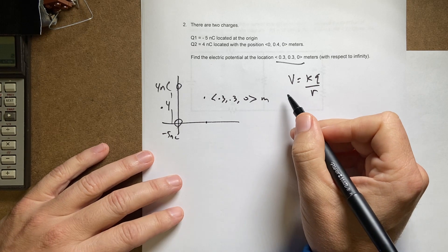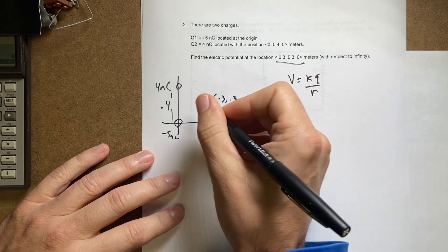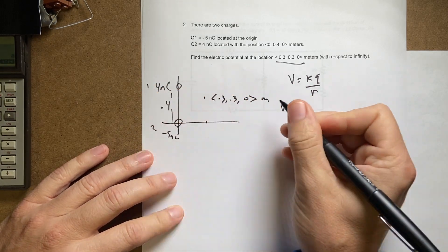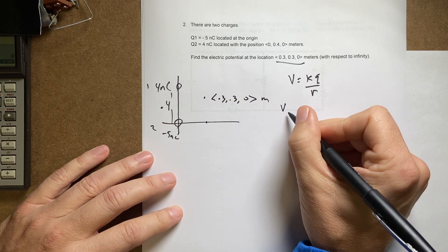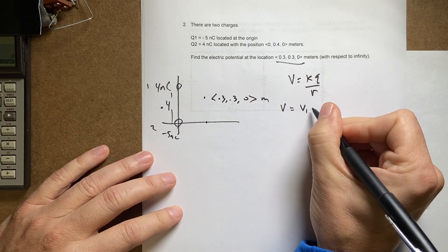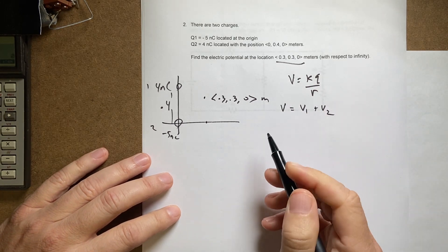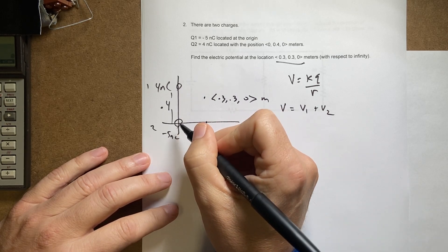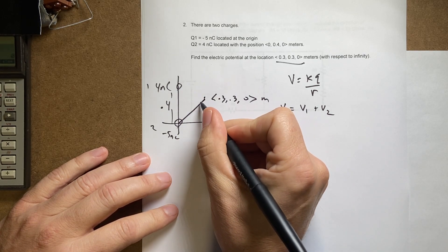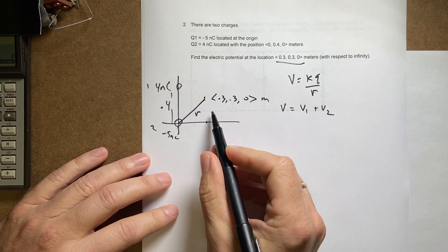So if I have two charges, V total, this we'll call one and that call two. V equals V1 plus V2. I just need to add up the potentials. So to do that, let's start with V2. The first thing I need is this R. So R for that one is pretty easy.